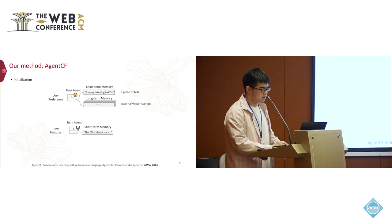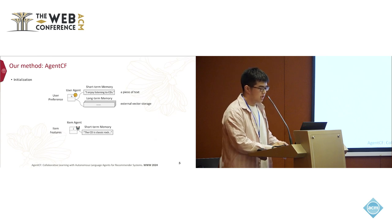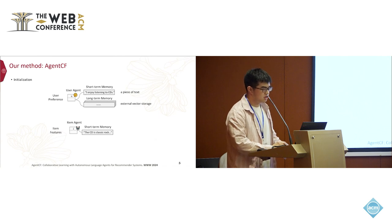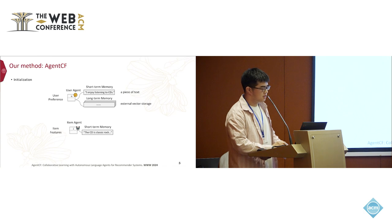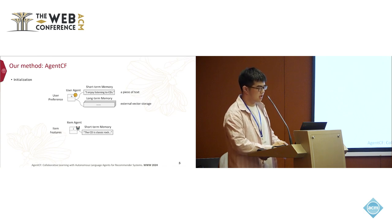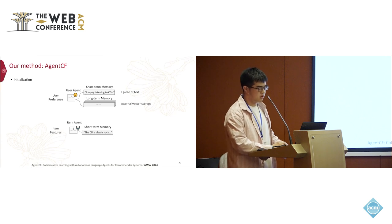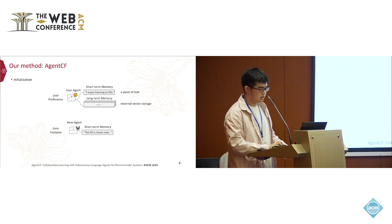This general information can be optimized to align with real users' personalized preferences. For item agents, we employ memory modules to record their attributes and the preference information of users they have interacted with. Considering that the life cycles of items in recommender systems are not as long as those of users, we equip them directly with short-term memory modules, using item meta-information for initialization.